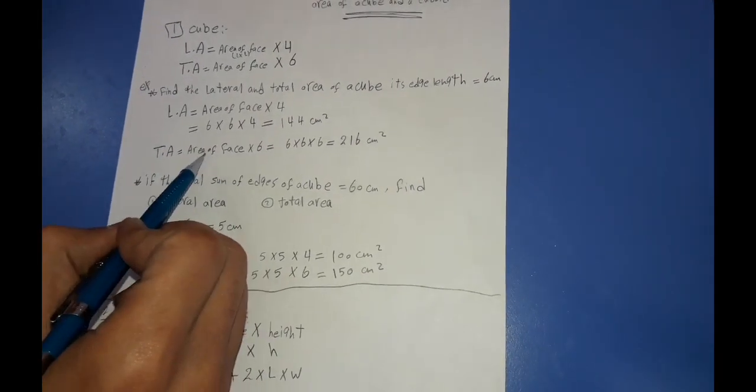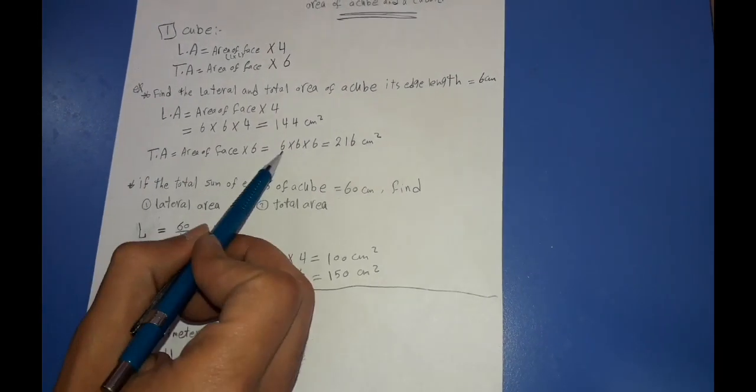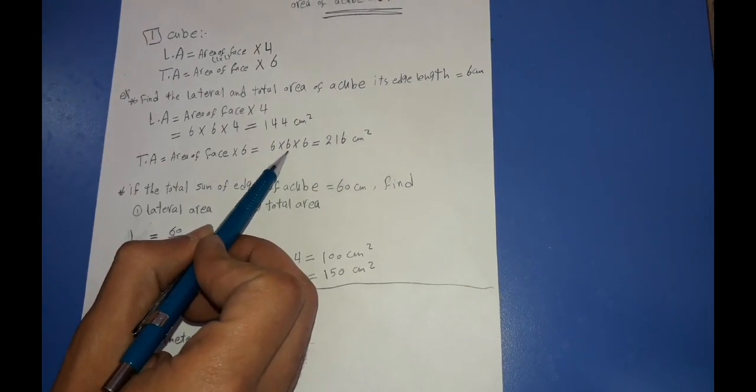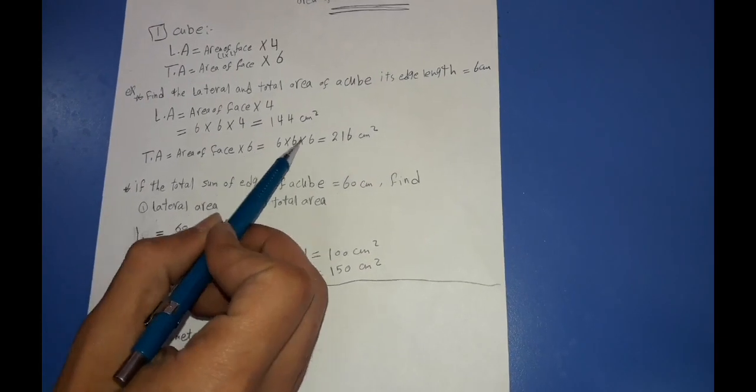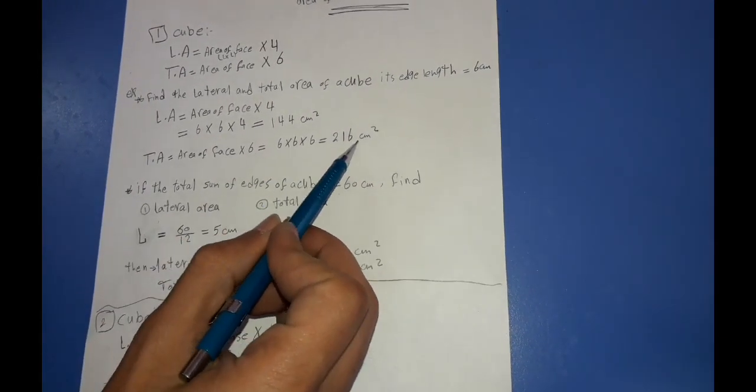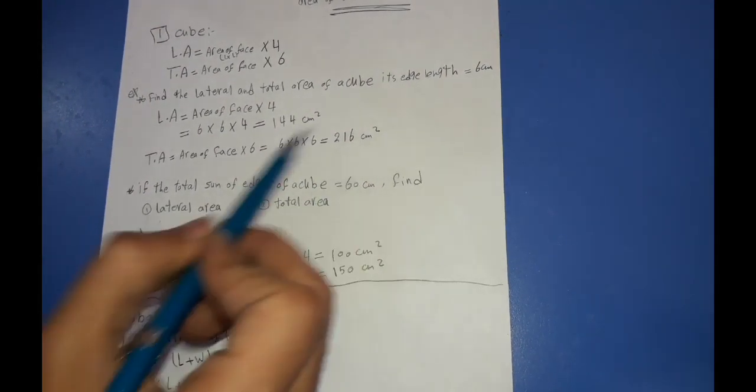And to find the total area: area of one face multiplied by 6, equal to 6 × 6 × 6, which equals 216 cm².